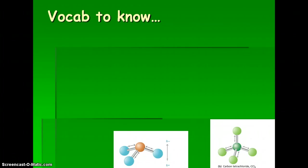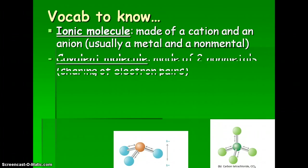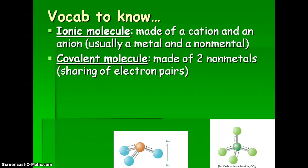A couple things to remind you of. An ionic molecule is typically made of a cation and an anion — usually a metal and a non-metal, with the metal being the cation and the non-metal being the anion. Electrons are essentially given from the metal to the non-metal to make this bond. A covalent molecule is made of two non-metals, typically, which involves the sharing of electron pairs.